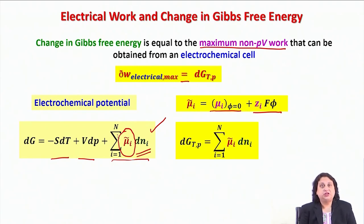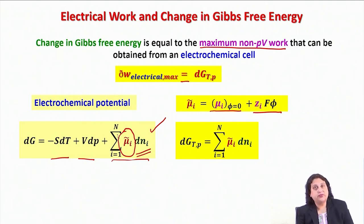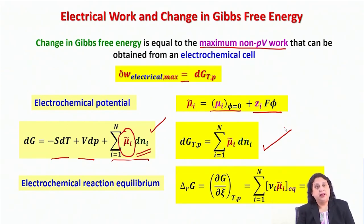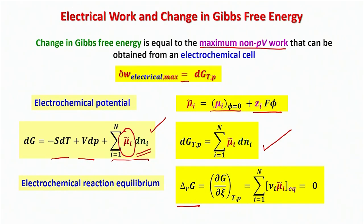Under constant temperature and constant pressure conditions, dG_TP — which is the differential maximum amount of work extractable from the electrochemical cell — is given by the corresponding expression. This tells me what the electrochemical reaction equilibrium condition will be. I know the electrochemical reaction is characterized by the reaction Gibbs energy, which is the derivative of the Gibbs free energy with respect to the progress of the reaction at given temperature and pressure.